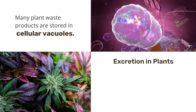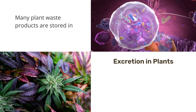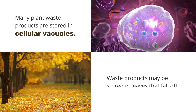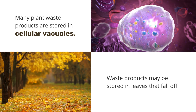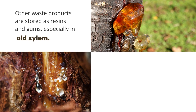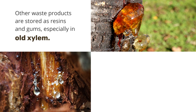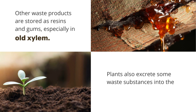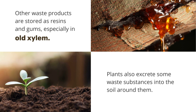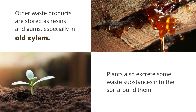Many plant waste products are stored in cellular vacuoles. Waste products may also be stored in leaves that fall off. Other waste products are stored as resins or gums, especially in old xylem. And plants also excrete some waste substances into the soil around them.